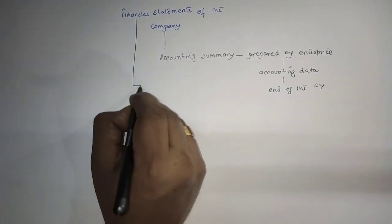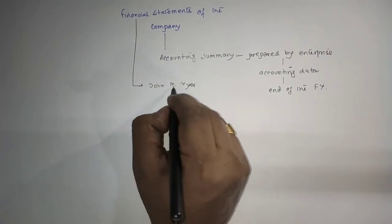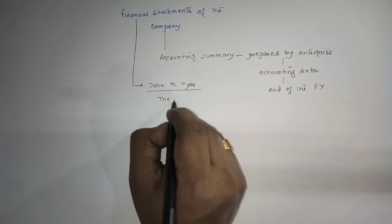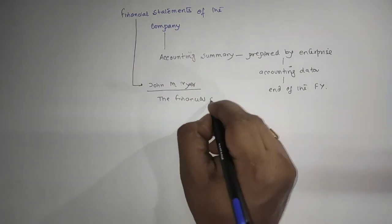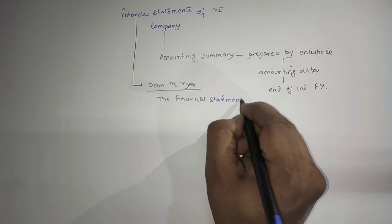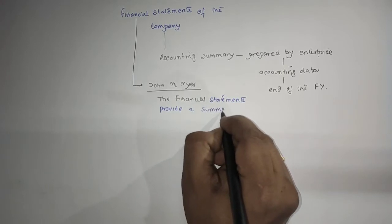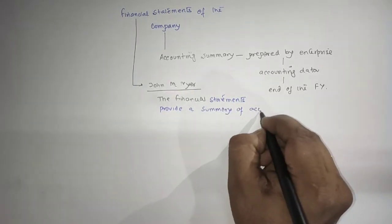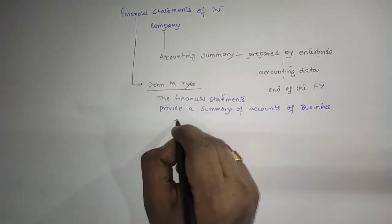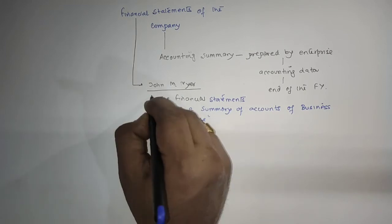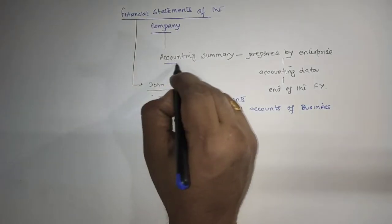According to John M. Mayer, the financial statement provides a summary of accounts of a business enterprise. So what you come to know about the financial statement of a company is that it is just an accounting summary prepared by an enterprise in a financial year with the help of accounting data.